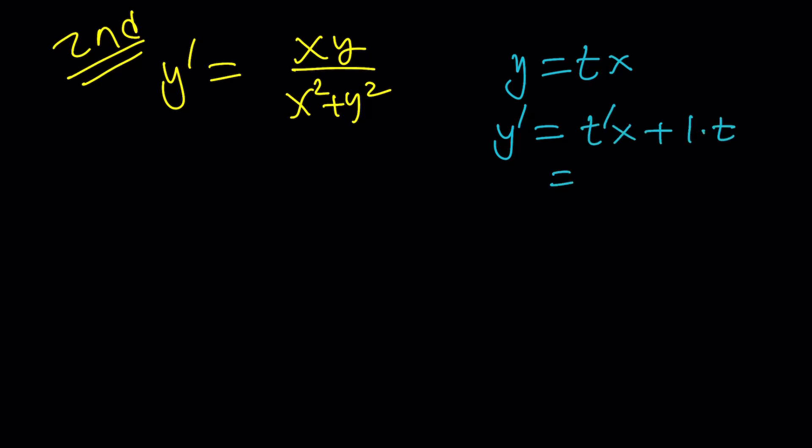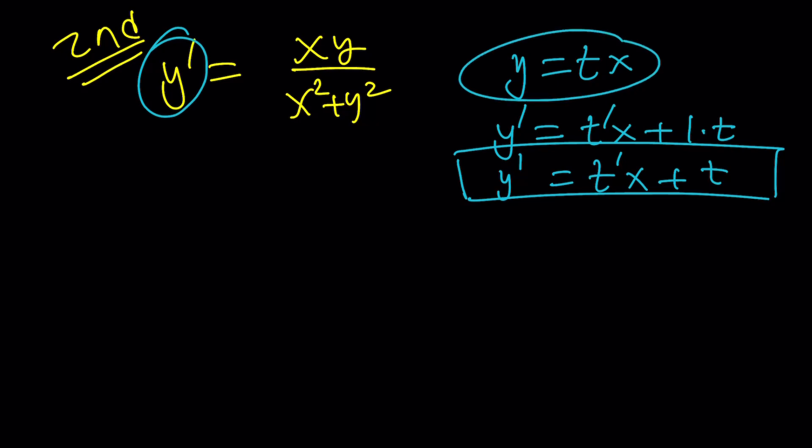Notice that t is going to be a function of x in this case. So derivative of t times x plus the derivative of x, which is 1 times t. So in other words, y' can be written as t'x + t. Awesome. That's something we're going to use because we have y'. And we're going to replace y with tx here and here. Let's do it.